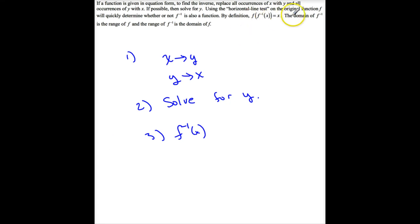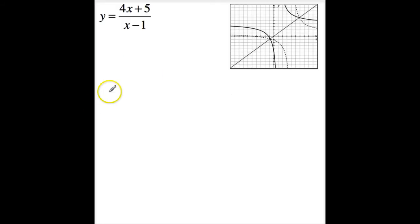And then it turns out the domain of the inverse is the range of f, and the range of the inverse is the domain of f. Let's do an example. y is 4x plus 5 divided by x minus 1. That's this curve right here. Now, the first thing you want to do is replace all occurrences of x with y and y with x. So x is equal to 4y plus 5 divided by y minus 1.